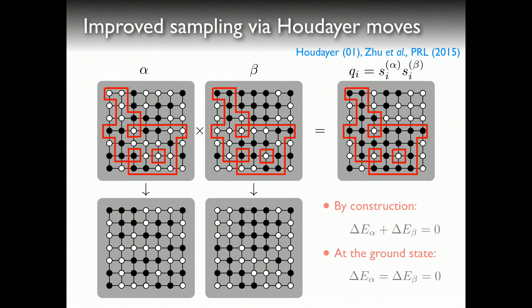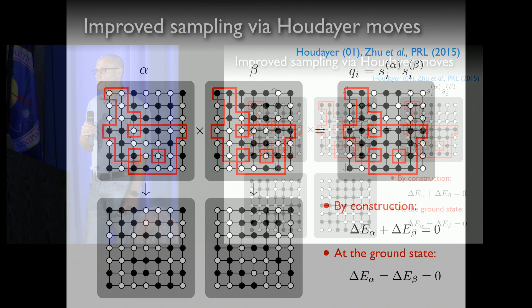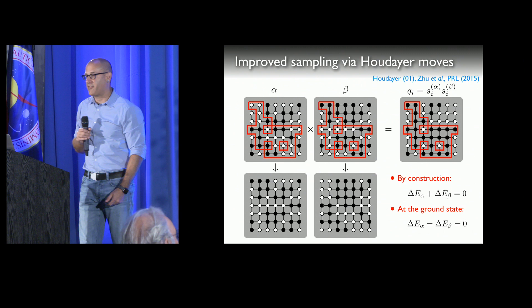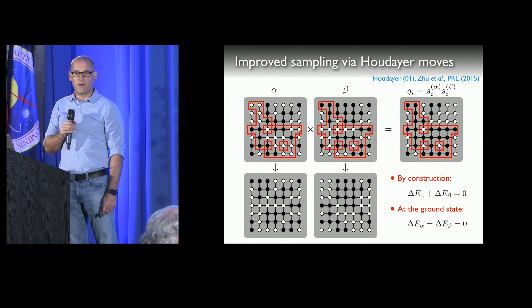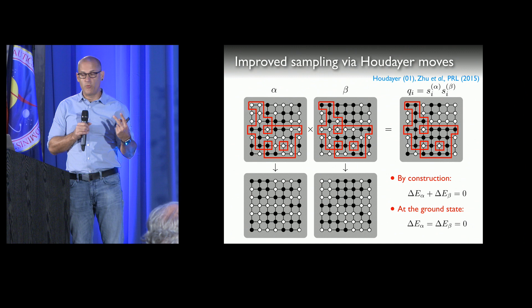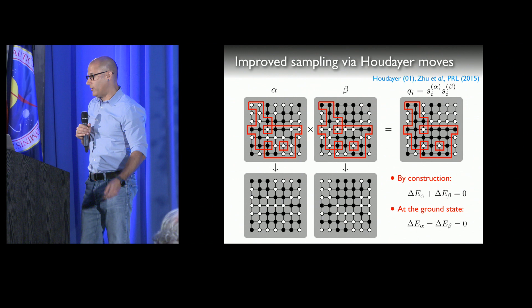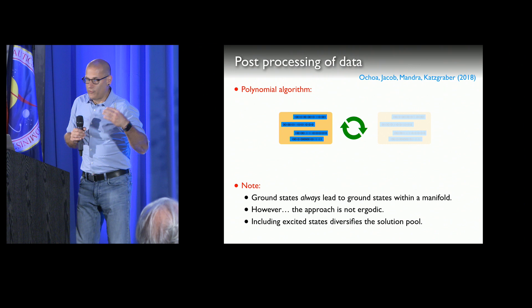If you do the algebra, this has a nice property: by construction the sum of the energies of the new configurations is zero, meaning one will go up and the other will go down. In a simulation, updates are rejection-free — very efficient. If you grab two ground-state configurations, you cannot go below the ground state energy, so if you feed two minimizing configurations into this, you potentially get two new minimizing configurations out. The only effort is building the cluster and flipping those spins, which is essentially O(N²).